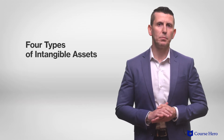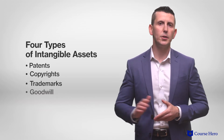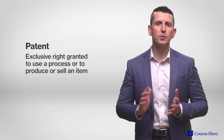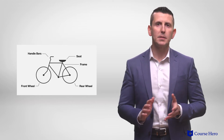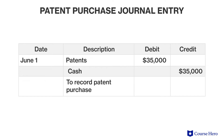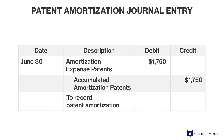There are four specific types of intangibles: patents, copyrights, trademarks, and goodwill. A patent is an exclusive right granted to use a process or to produce or sell an item. Patents have a maximum useful life of 20 years. Since a patent has a limited life, it should be amortized over its estimated life, not to exceed 20 years. Suppose that Hollywood Movies purchased a patent for $35,000. When the patent is first acquired, it is recorded at initial cost. Suppose further that the patent has a useful life of 20 years. Each year, the company will record an amortization expense of $1,750, which is $35,000 divided by 20.